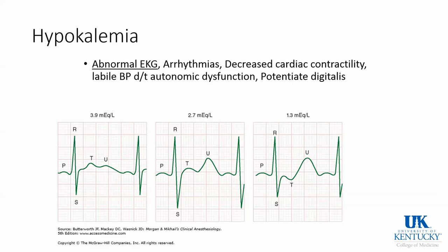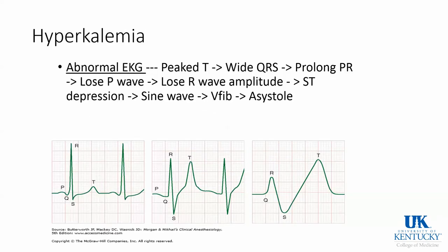Hyperkalemia is the opposite. You start with a peaked T wave, then a widened QRS, prolonged PR interval, eventually loss of your P wave, loss of R wave amplitude, ST depression, which then turns into a sine wave pattern, and eventually ventricular fibrillation and asystole. This is also due to delayed repolarization. Usually you don't see EKG changes until potassium is about 6.5 to 7.